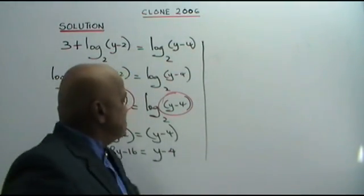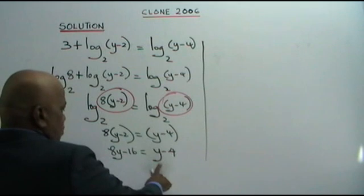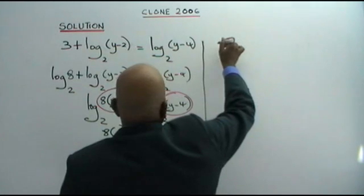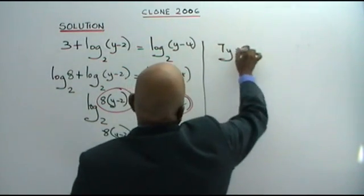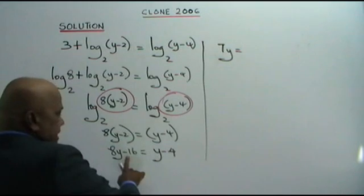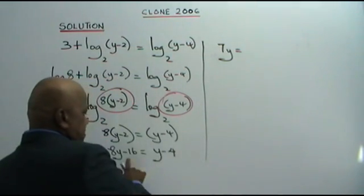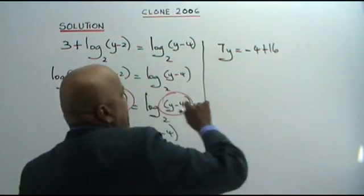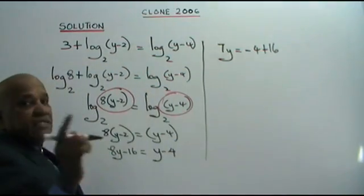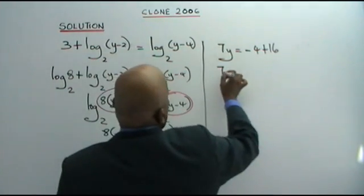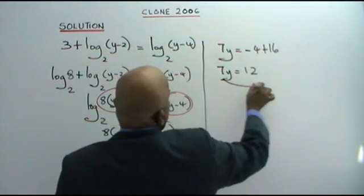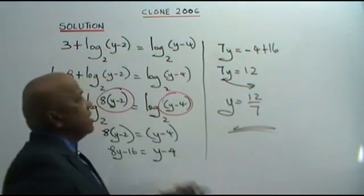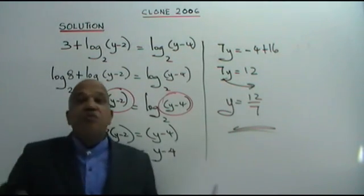Let's go further. Bring Y to this side: 8Y minus Y gives 7Y. On the other side, negative 16 comes over as positive 16, so we have negative 4 plus 16 equals 12. Therefore 7Y equals 12. Bring the 7 down: Y equals 12 over 7. That is your answer — the value of Y.